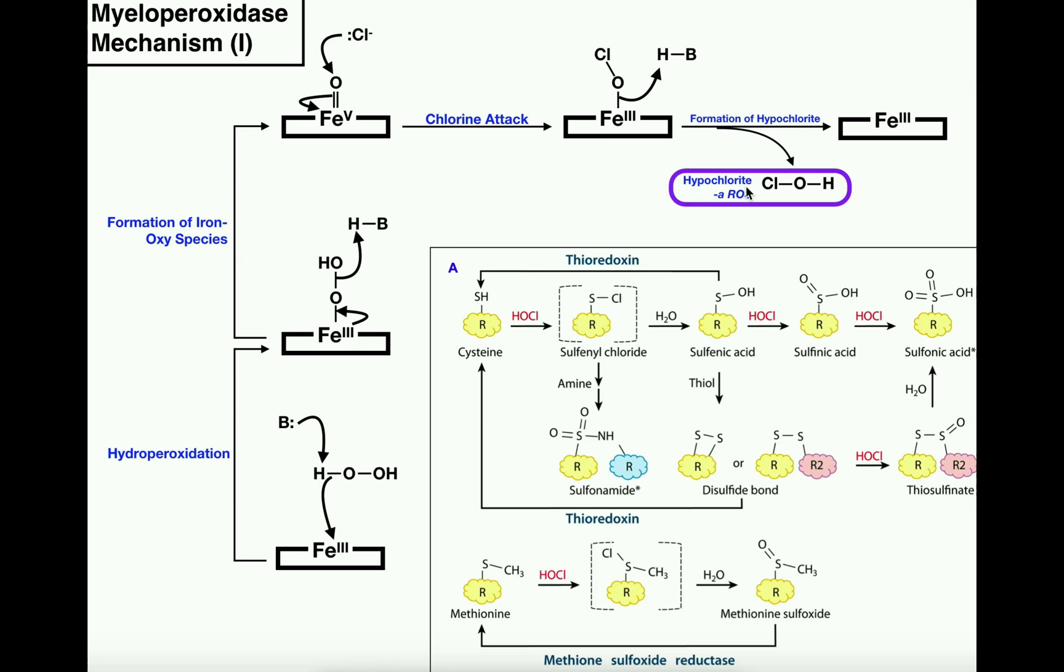First thing I want to do is look at the myeloperoxidase mechanism and then talk about what it does at the biochemical level. This enzyme uses a heme moiety. It has a P450 type of mechanism and the first thing we have is iron 3 plus and we're going to hydroperoxidate it. The substrate for this enzyme is actually hydrogen peroxide, HOOH or sometimes written H2O2.